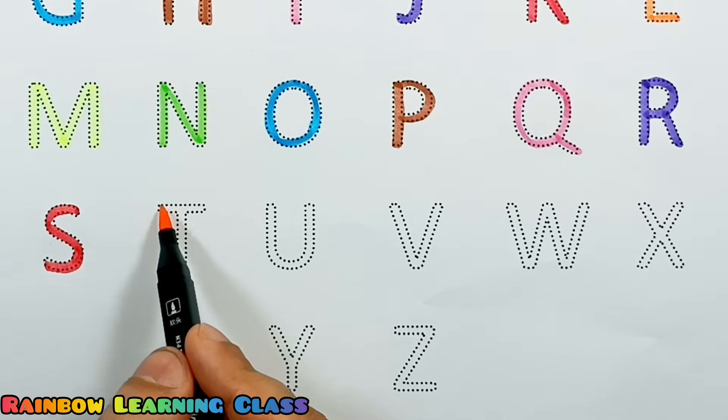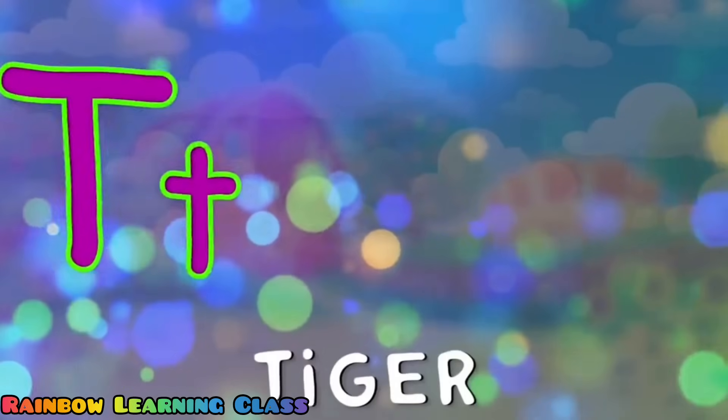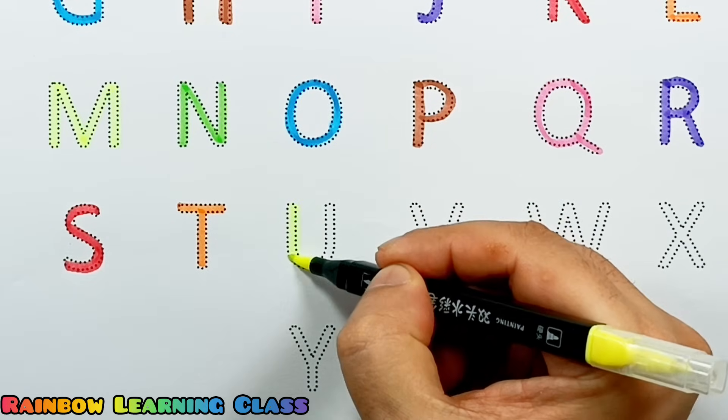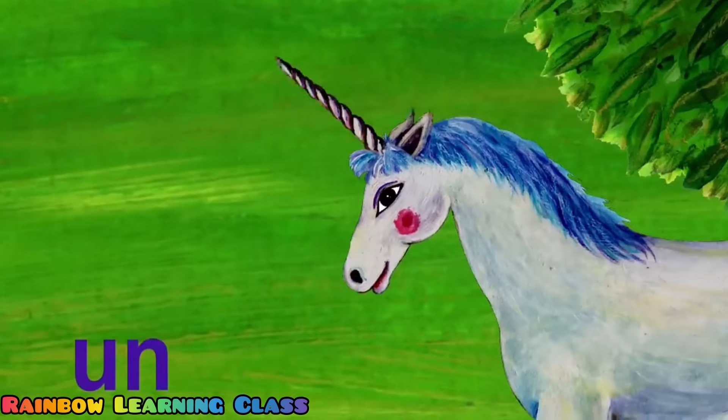A, B, C, D, E, F. T, it's the tiger. H, I, J, K, L, M, N, O, U, Q, R. Unicorn. Unicorn.